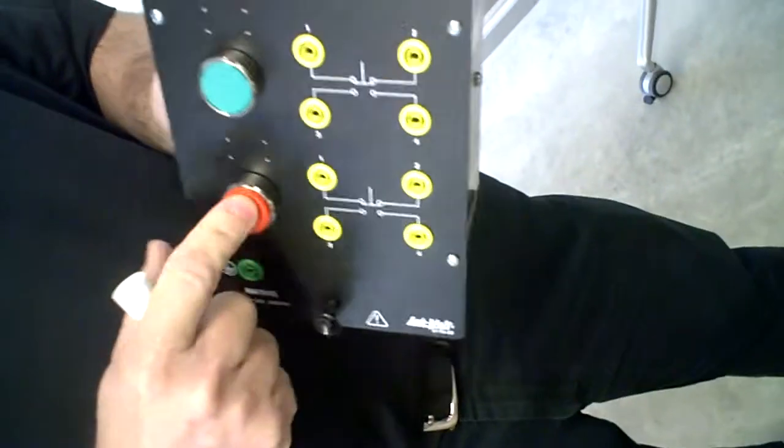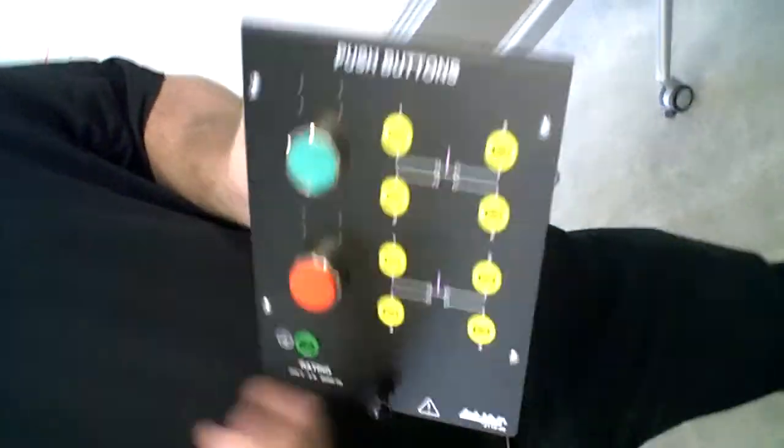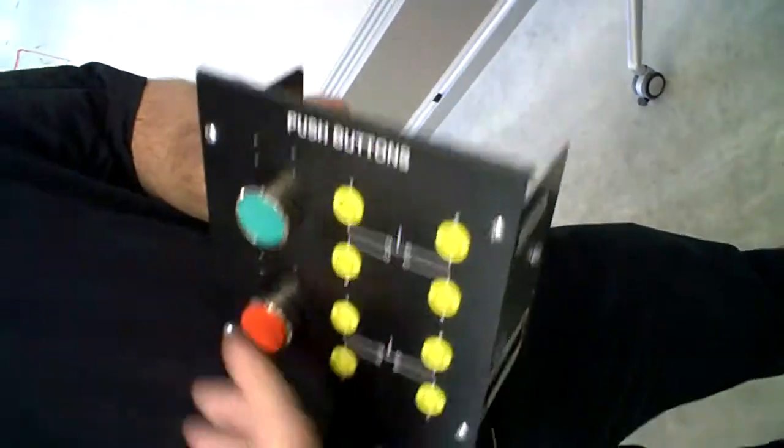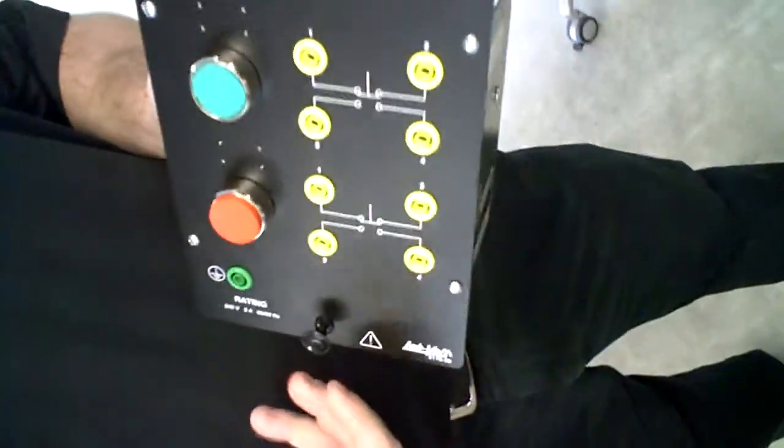All right, so the stop buttons. The push button controls on this one, you've got two push buttons. You've got a momentary contact, both of them. You've got one that's red and one that's green. And I emphasize one's red and one's green. There's no difference between the physical operation of these two devices. They both have normally open and normally closed contacts.